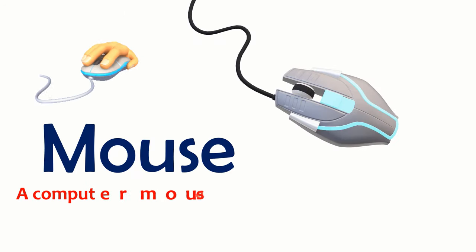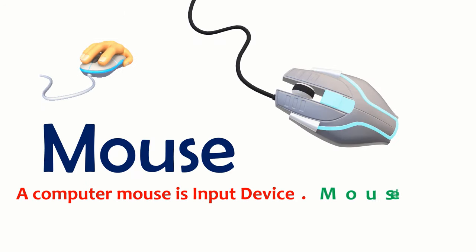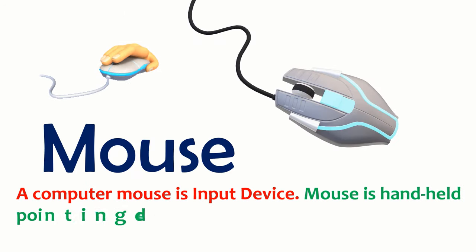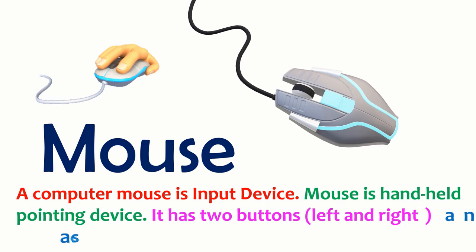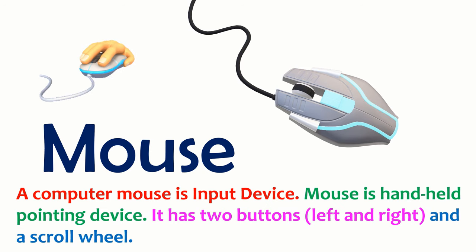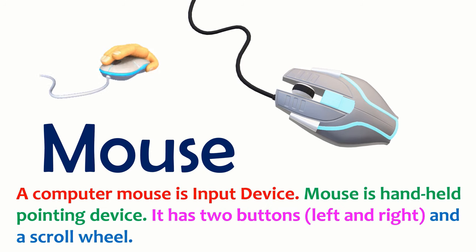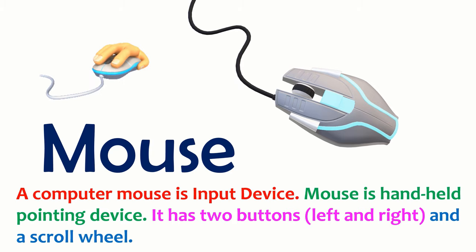A computer mouse is an input device. Mouse is a handheld pointing device. It has two buttons, left and right, and a scroll wheel.